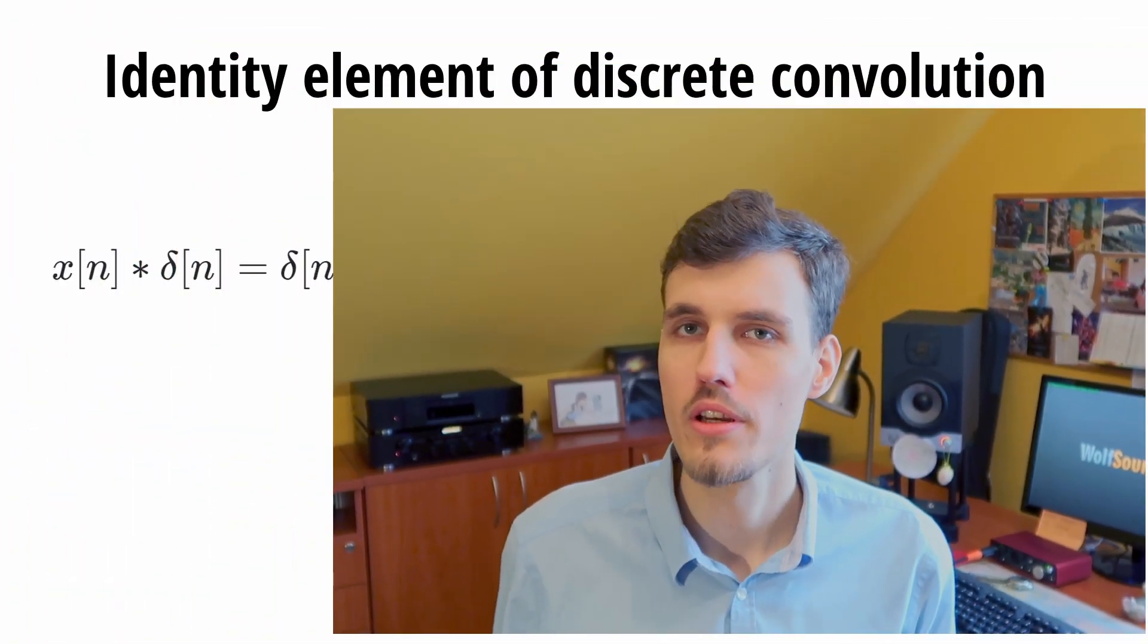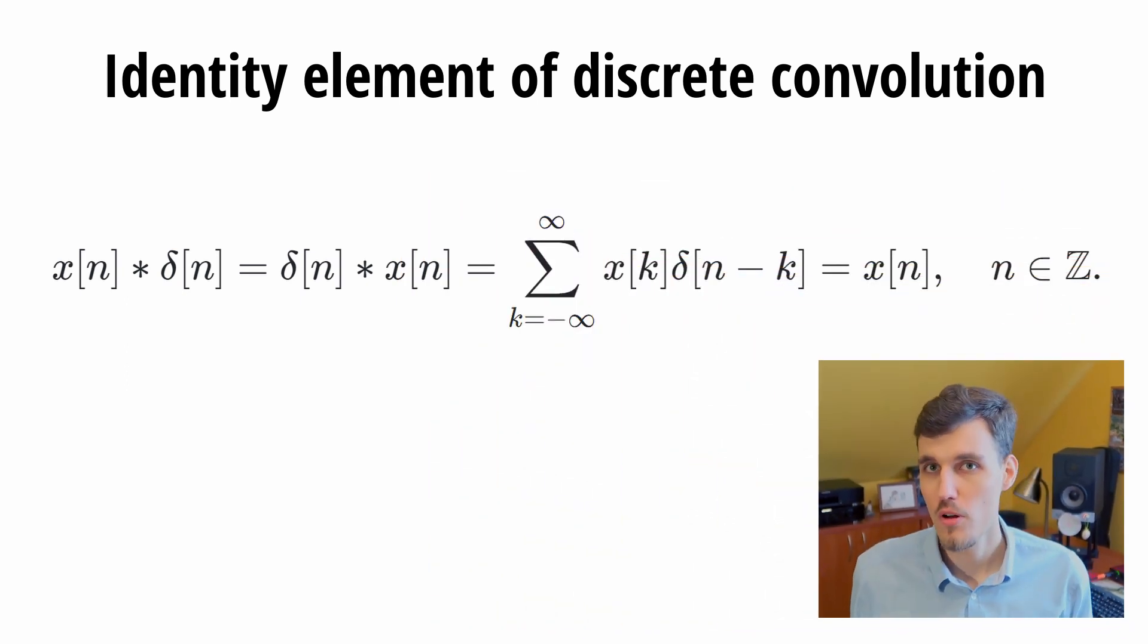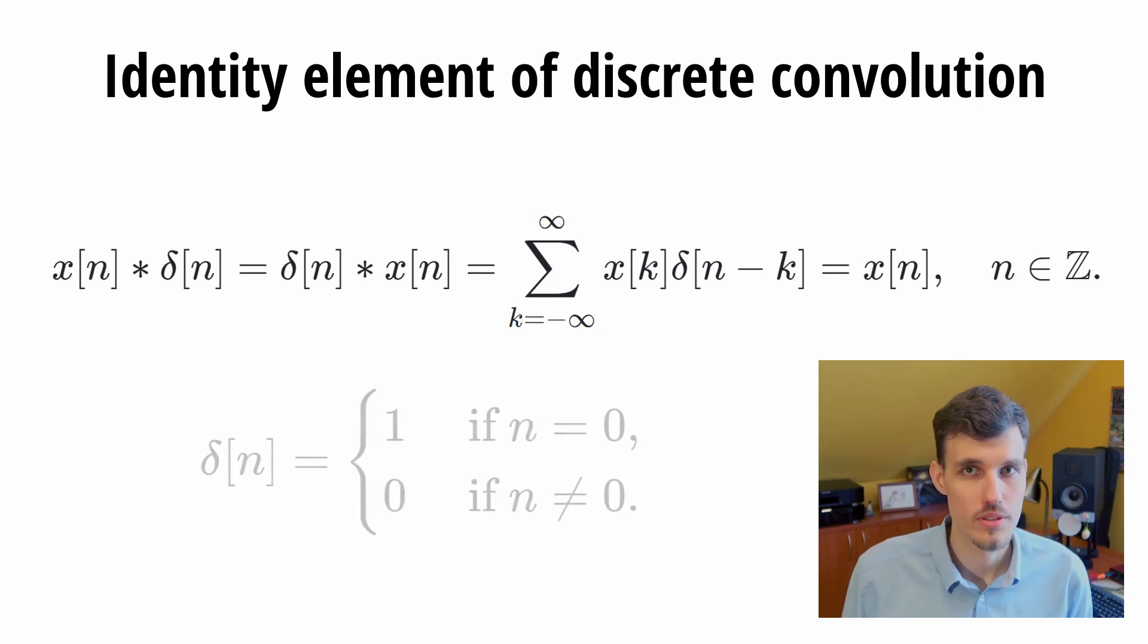Let's consider discrete convolution first. Here we are looking for a discrete signal delta that convolved with a signal x returns exactly that signal x. Looking at the definition of convolution we may infer that our desired delta should pick only x out of the infinite stream of samples x. Therefore, it should be defined as follows: delta should be 1 only if n is equal to 0 and it should be 0 everywhere else.